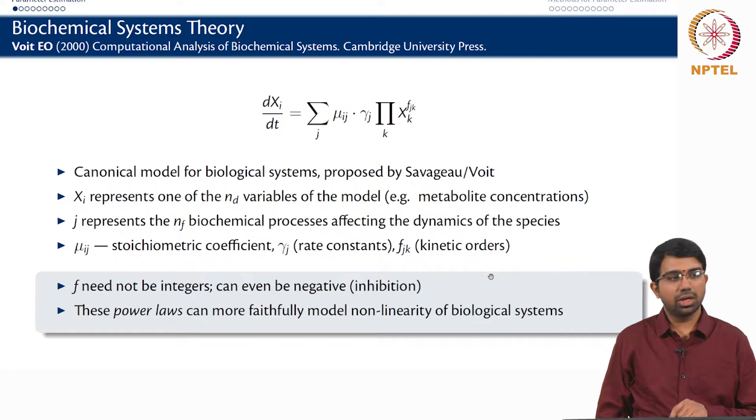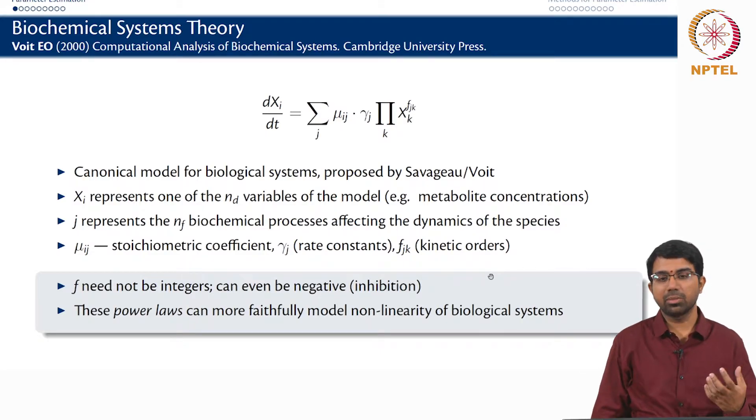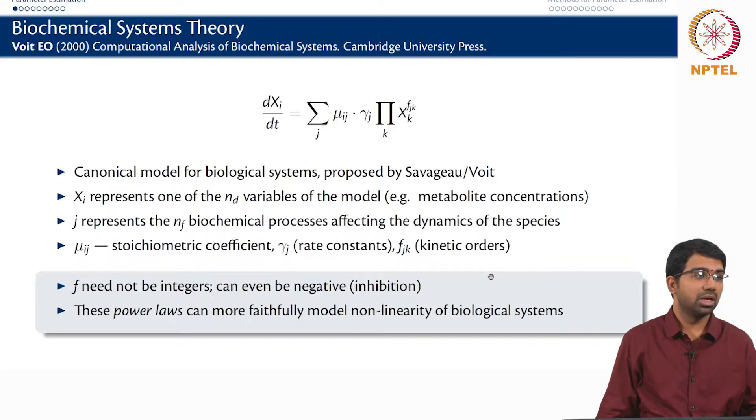So given a system of this sort, a typical challenge is you would hopefully have generated some data or some biologist has come to you with some data on a particular system. How do you then model the system? The first step in modeling is you understand the system and write out the equations. But the moment you write out the equations, you still do not know the value of any of the parameters. Until you know the value of the parameters, you cannot make any worthwhile predictions.